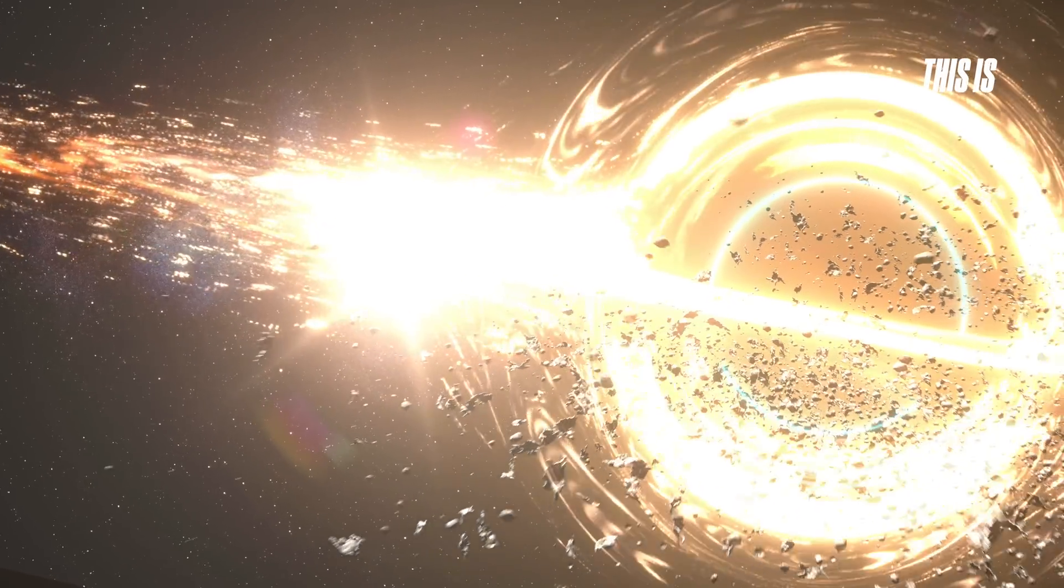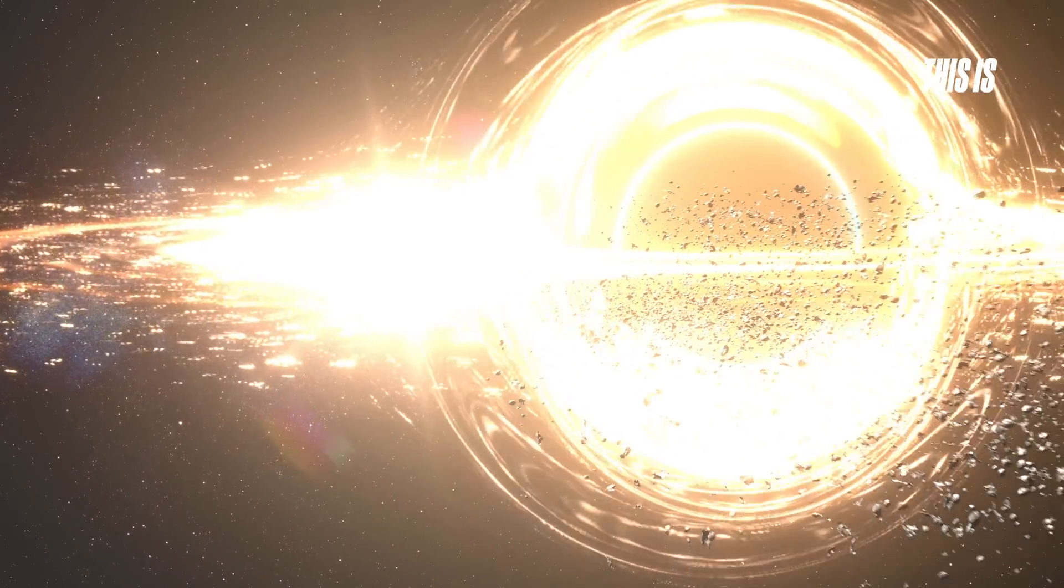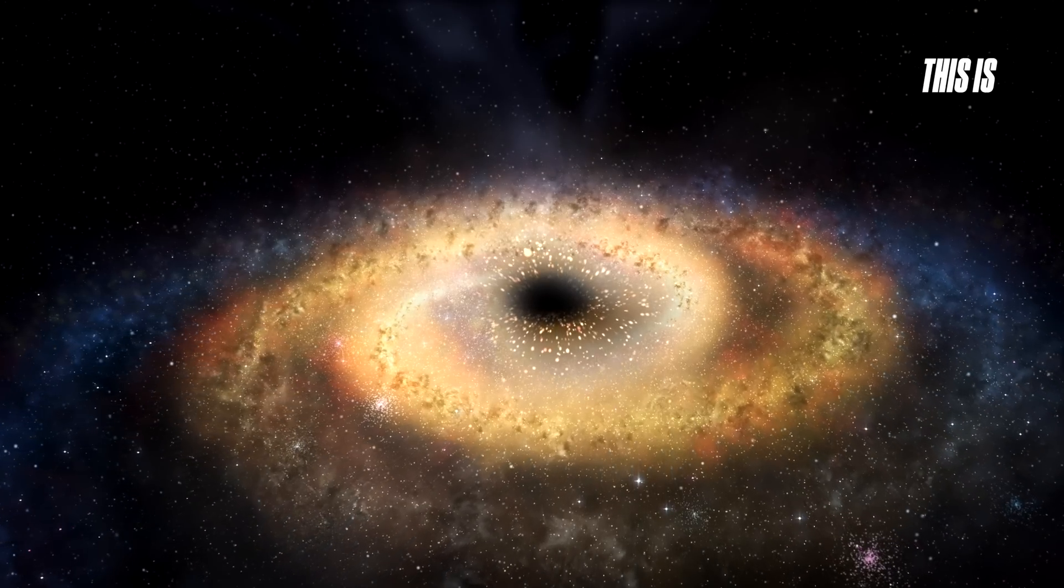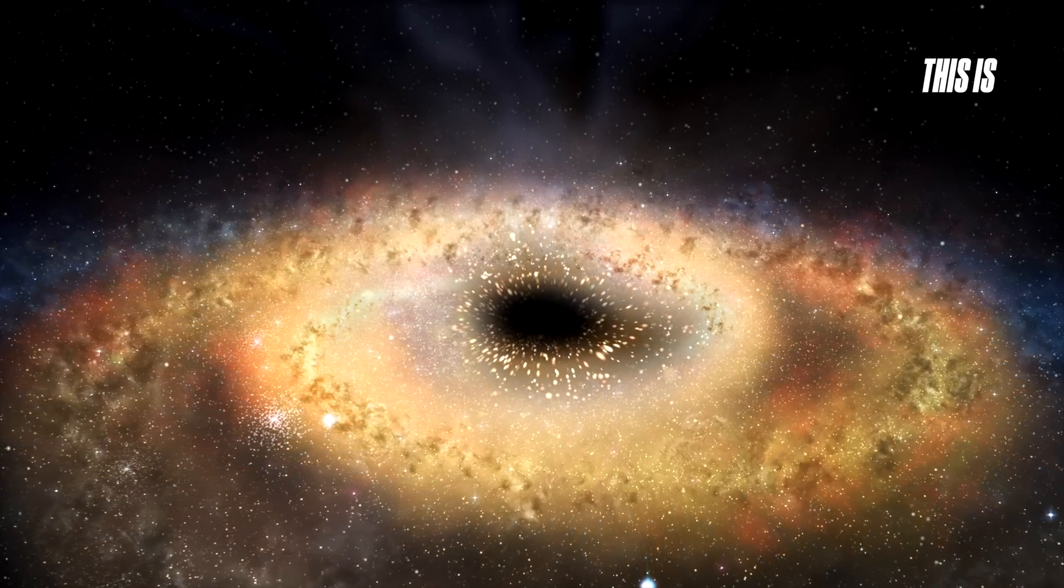A black hole pulls in matter from different directions, but eventually, all incoming matter merges with the dominant disk. Any secondary disk would be gravitationally unstable, either merging with the primary one, or being torn apart and adjacent.